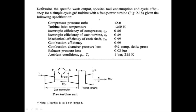The next numerical: determine the specific work output, specific fuel consumption, and cycle efficiency for a simple gas turbine with a separate power turbine, as shown in the figure. The high-pressure turbine drives the compressor and the power turbine produces the net work output. Specifications: compressor pressure ratio = 12, turbine inlet temperature = 1350 K, isentropic efficiency of compressor = 0.86, turbine isentropic efficiency = 0.89, mechanical efficiency = 0.99, combustion efficiency = 0.99, combustion pressure loss = 6% of compressor delivery pressure, exhaust pressure loss = 0.03 bar, ambient conditions = 1 bar and 288 K.